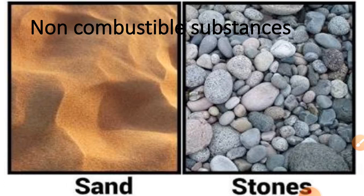Here are non-combustible substances. Non-combustible substances are those which do not burn in air or oxygen. For example, sand and stone. Other examples include water, glass, and cement. These are examples of non-combustible substances — they cannot burn in air.